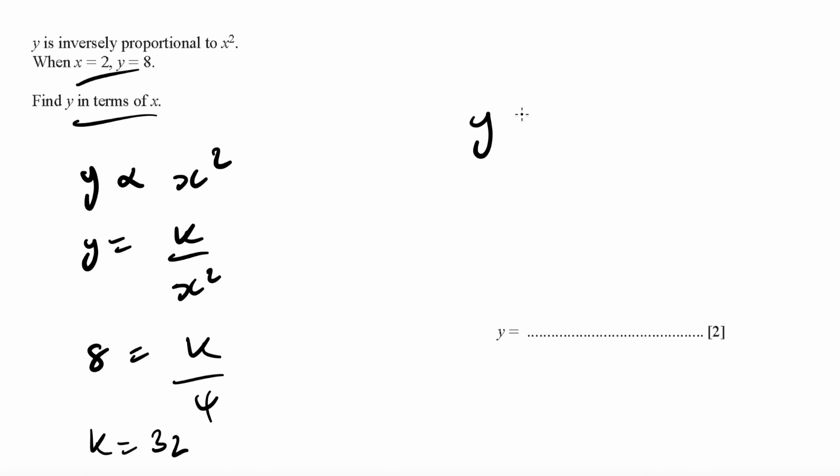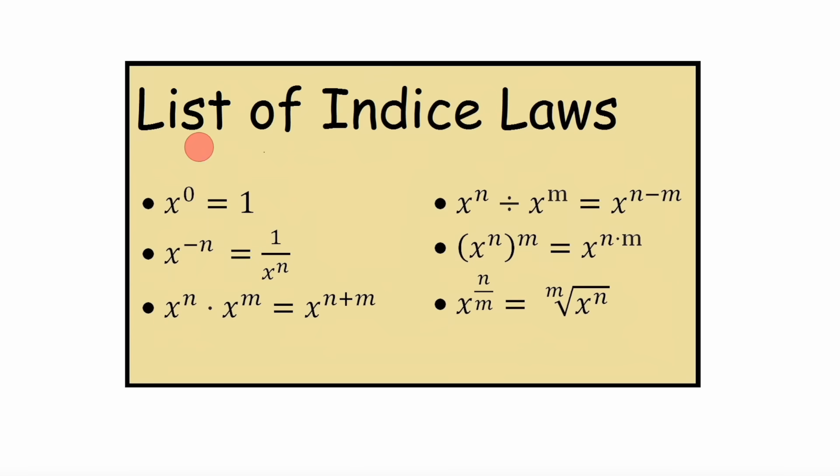Laws of indices: whenever it's power 0, it equals 1. When it's negative 1, it becomes the inverse. When it's multiplication, you add the two powers. When it's division, you minus the powers. When it's like this, you can multiply the two powers. When it's n over m, you can write it in this format.